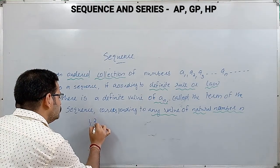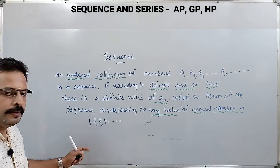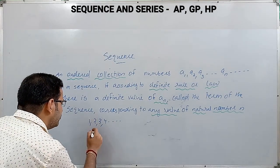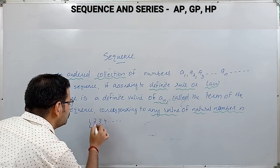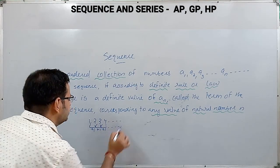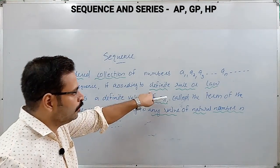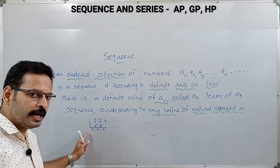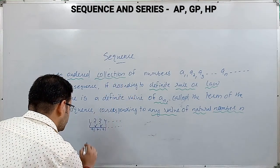Let's consider some examples. 1, 2, 3, 4, etc. — is this a sequence or not? The second term is obtained by adding 1, the third term by adding 1 to the second term, the fourth term by adding 1 to the third term. So it is an ordered collection following a definite rule: every term is obtained by adding a constant 1 to the preceding term. That means it is a sequence.